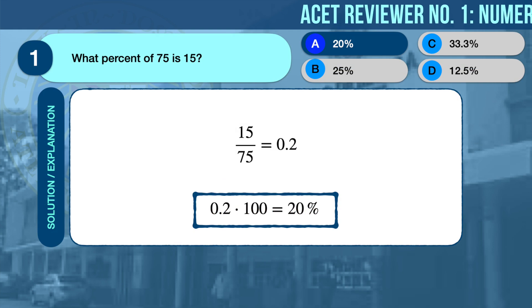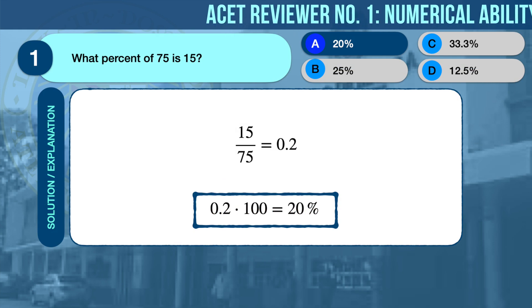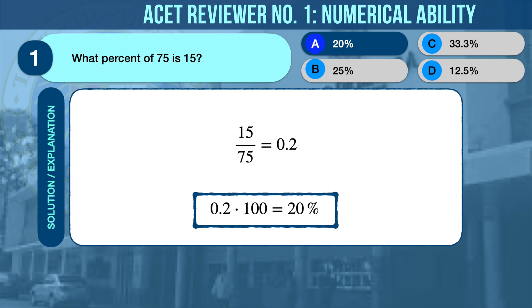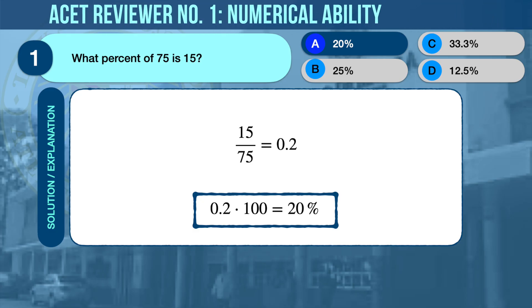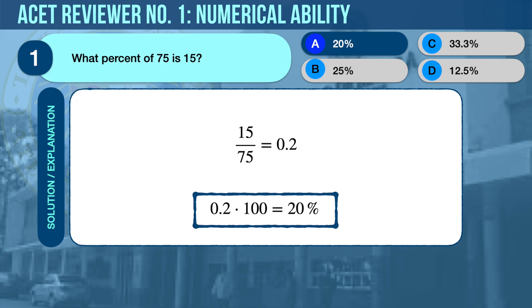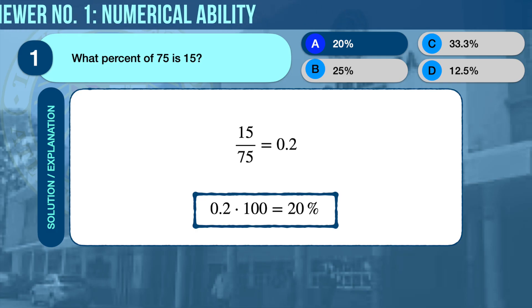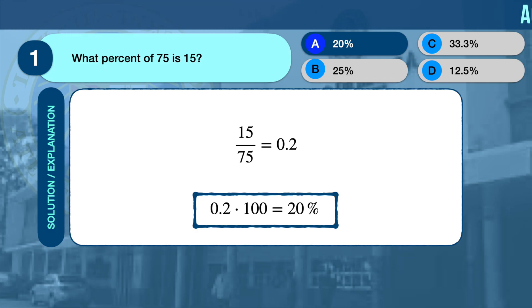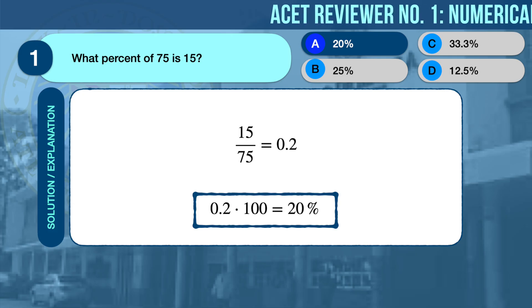The correct answer is A, 20 percent. To find out what percent of 75 is 15, we simply divide 15 by 75 to get 0.2, a decimal number. To convert a decimal number into percent, we simply multiply it by 100. Therefore, 15 is 20 percent of 75.